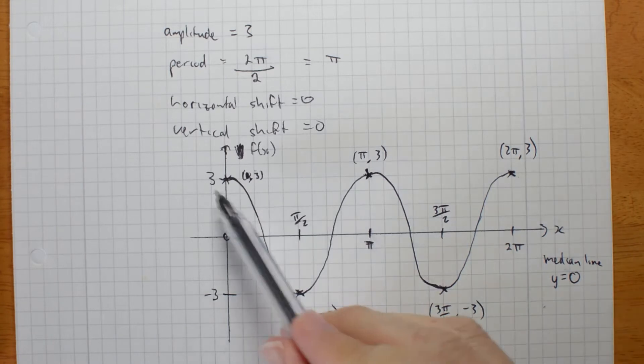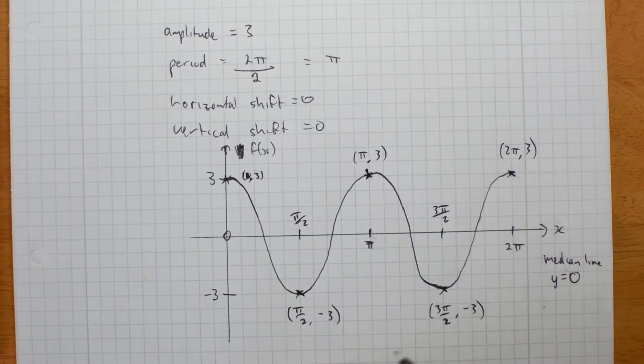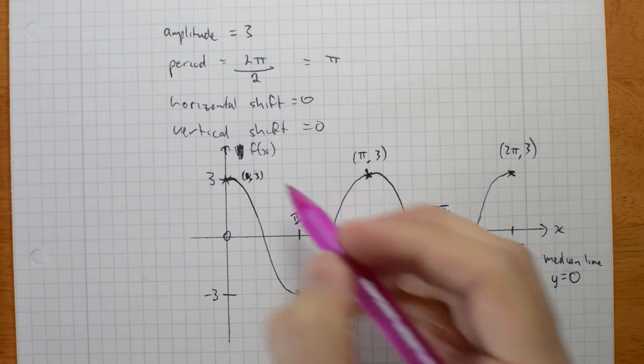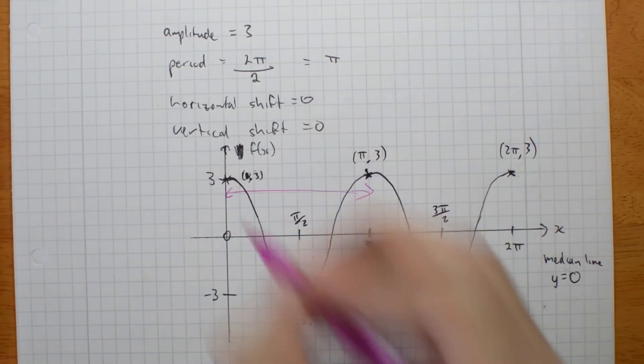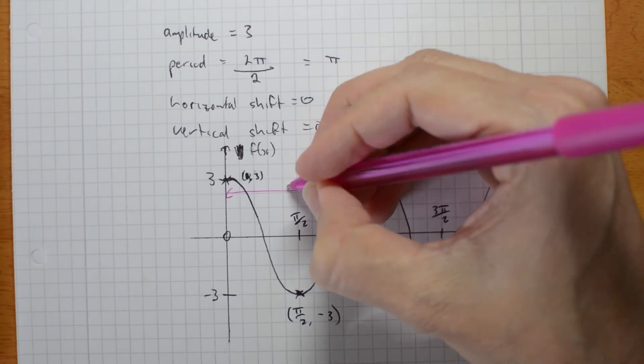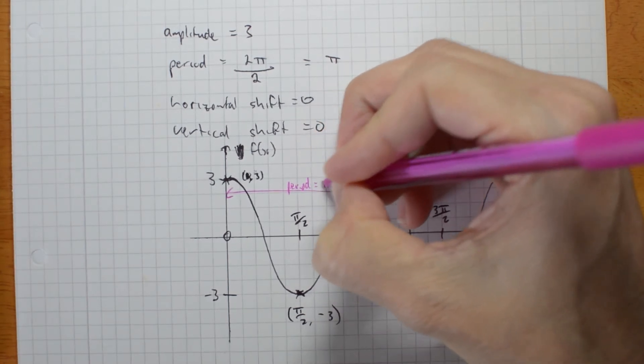The period is pi. If you wanted, you could mark that. Your textbook actually doesn't. I'm going to get another colour to mark that, otherwise it's going to start getting confusing. Pick any point to the same point one cycle later, and you can say period is pi.